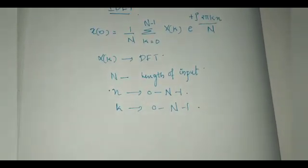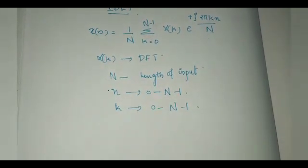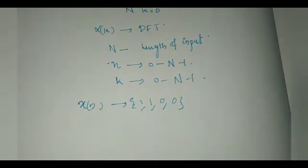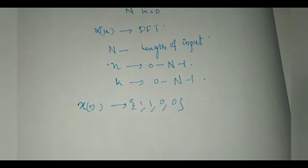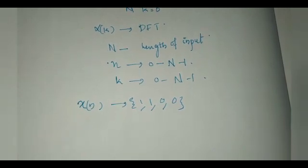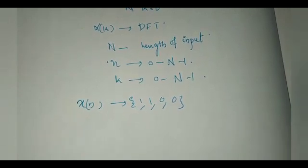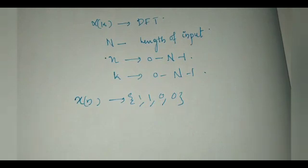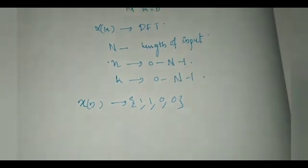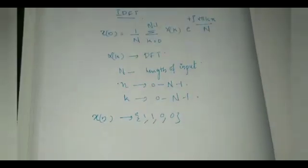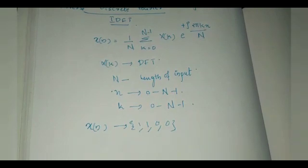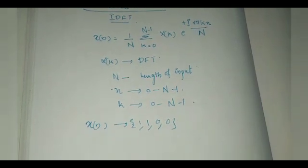Here, I am going to explain with the help of an example. I am going to take my x of n as the set {1, 1, 0, 0}. This same sequence I have used in my DFT video for finding the discrete Fourier transform.